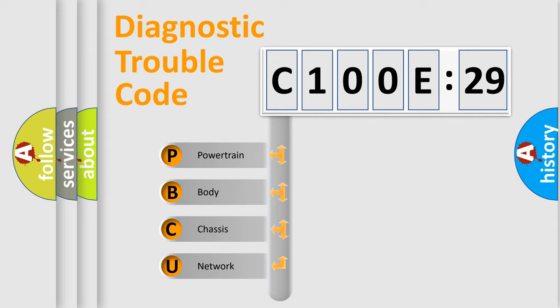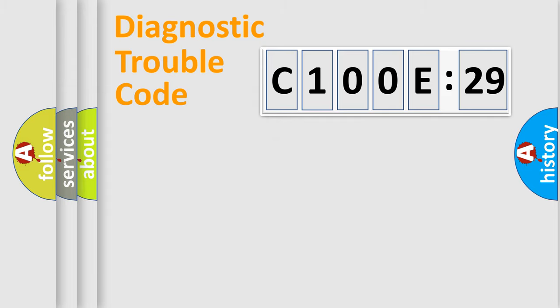We divide the electric system of automobile into four basic units: Powertrain, Body, Chassis, and Network.